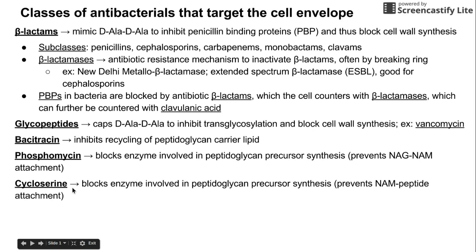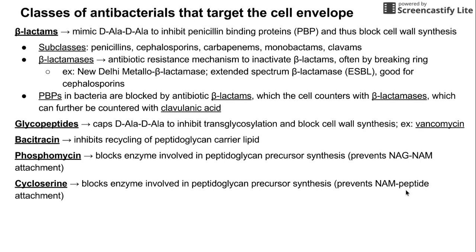Cycloserine is a little similar. It blocks the attachment from NAM to the peptide. So there's a string of NAG and NAM with peptides hanging off, and cycloserine prevents the peptides from attaching to that carbohydrate chain, which blocks peptidoglycan synthesis.